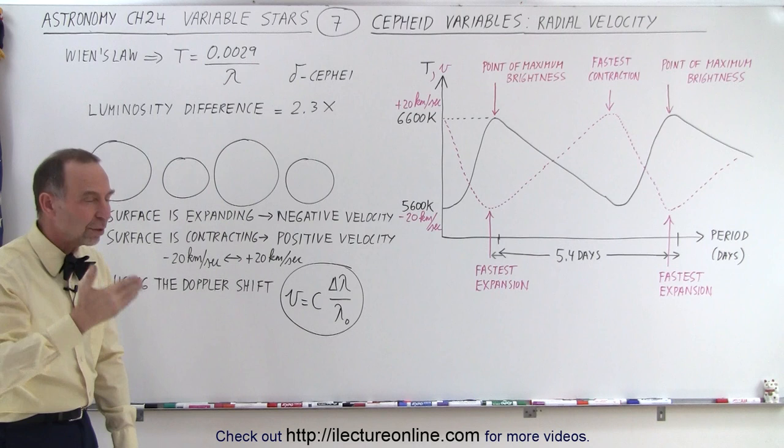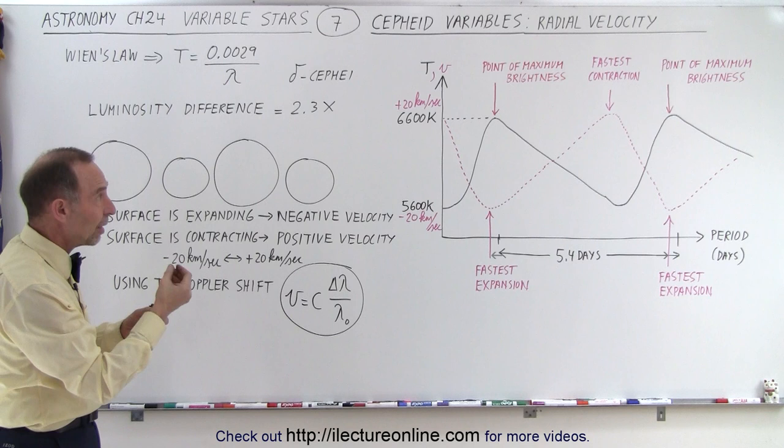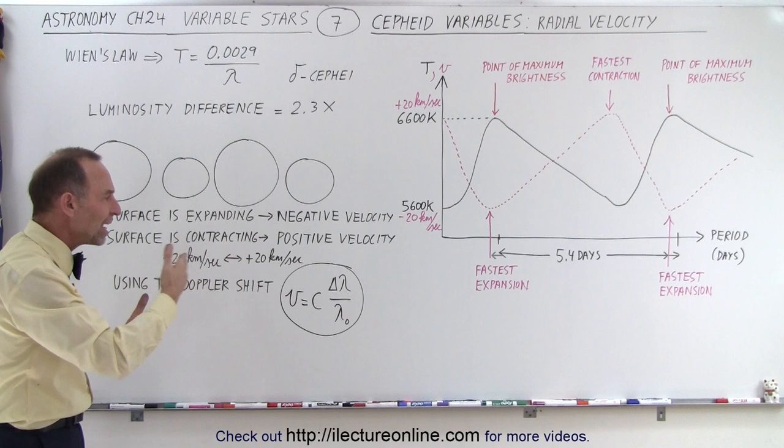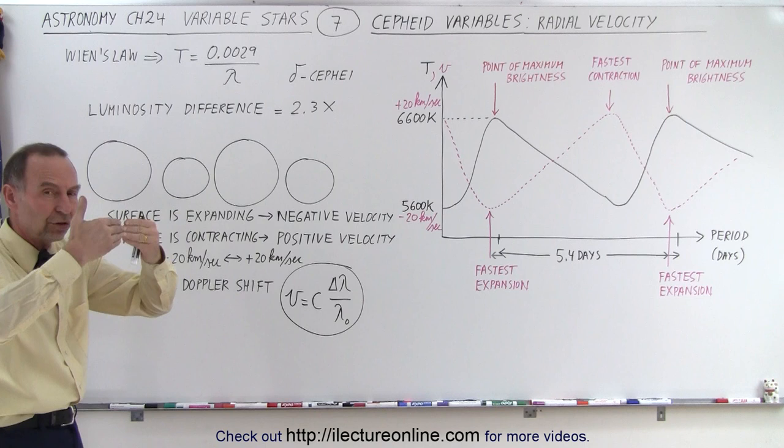The star grows in size and shrinks in size, and there's an interesting relationship between the periodicity of the temperature, the periodicity of the intensity of the light, the brightness of the star, and the periodicity of the change in the velocity of the surface.